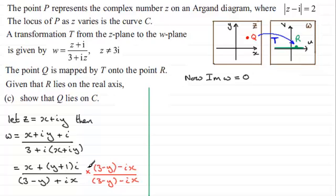Well, taking the numerator here, when we multiply this with this, we're going to have, for the imaginary part, X times minus iX. That's going to be minus X squared. We're going to get an imaginary part when we multiply Y plus 1i with the 3 minus Y here. So we're going to have plus Y plus 1 multiplied by 3 minus Y.